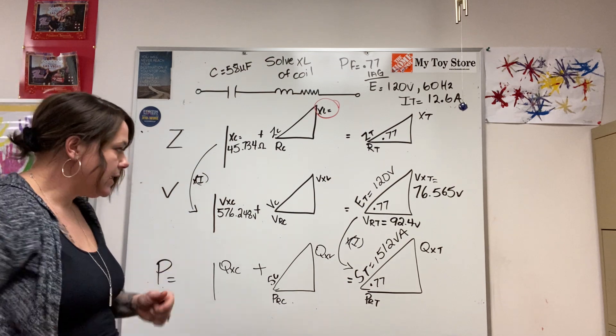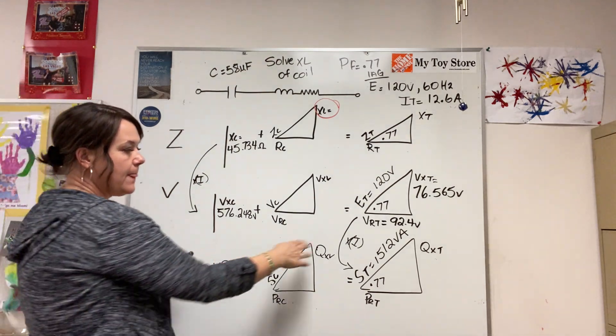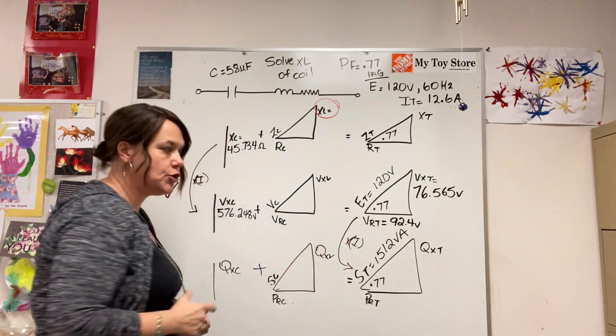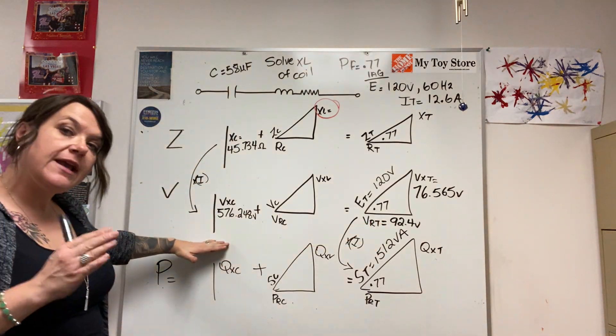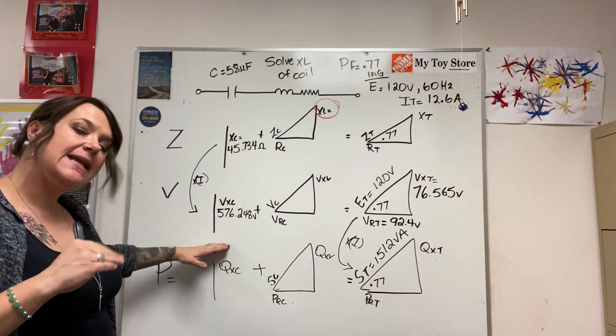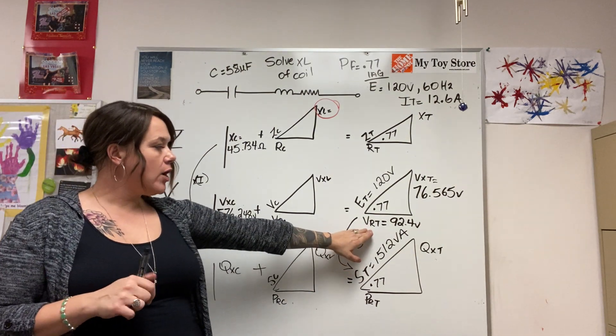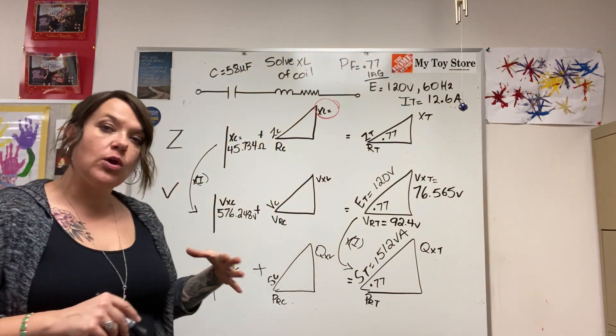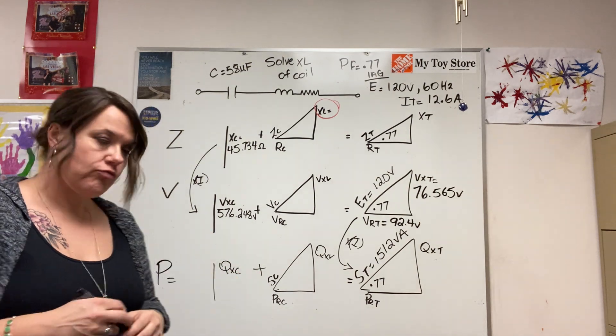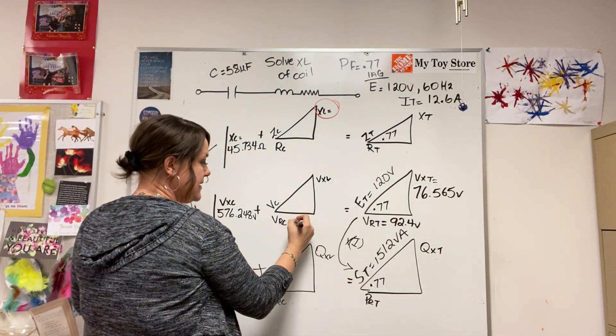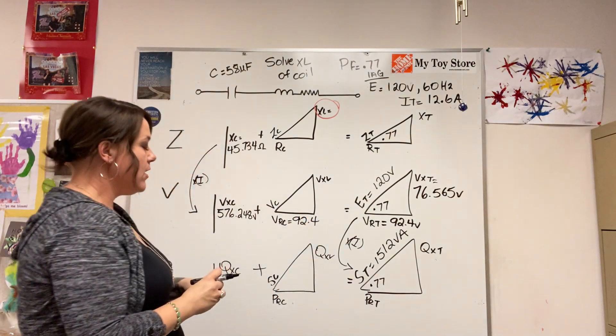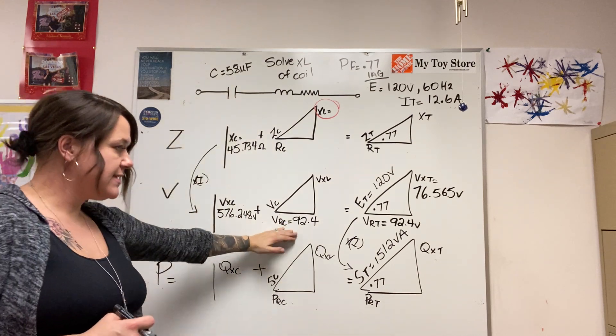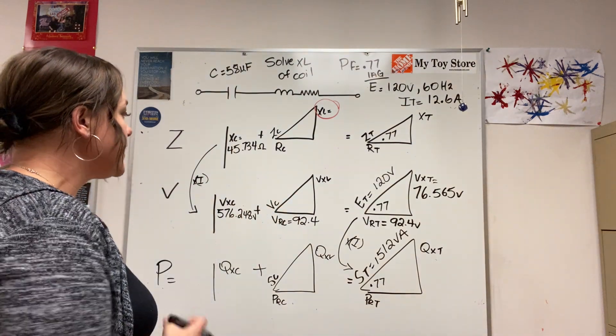So interestingly enough, I have my VRT, the in-phase volt drop of the circuit at 92.4 volts. I know my capacitor is pure, that means it has no variable of resistance in it. So whatever volt drop I have for the resistor here is also the volt drop of here, because in-phase loads are additive together. So whatever this is, is this. So the only variable of resistance volt drop in this circuit is here, so whatever is here would then go to your total. We're just working backwards a little bit here.